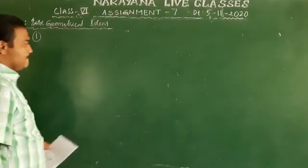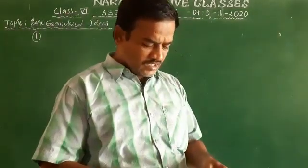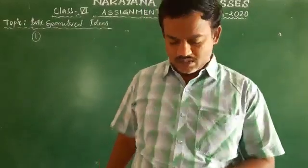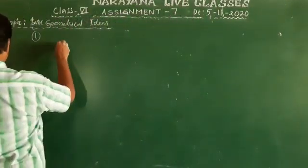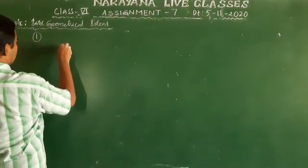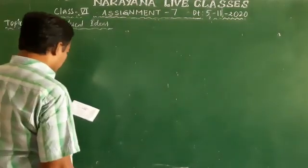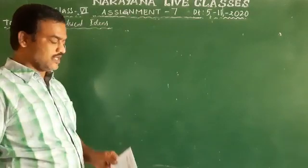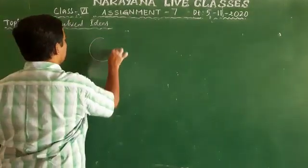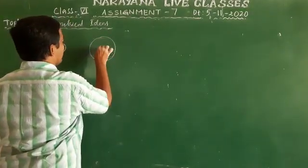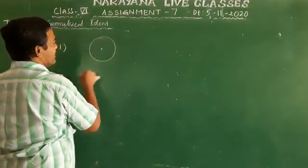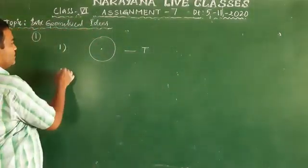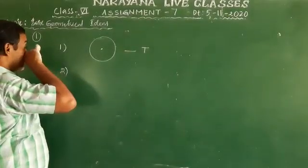First question: answer the following, say true or false. First one — we can locate one and only one centre in a circle. So if there is a circle, we can locate one and only one centre. The answer will be true. First one is true — only one centre is contained in a circle.